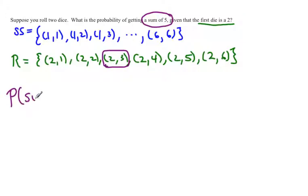a sum of 5, given the first die is 2, equals the one way you can get a sum of 5 in this sample space out of six outcomes in the restricted sample space. So your probability is 1/6.